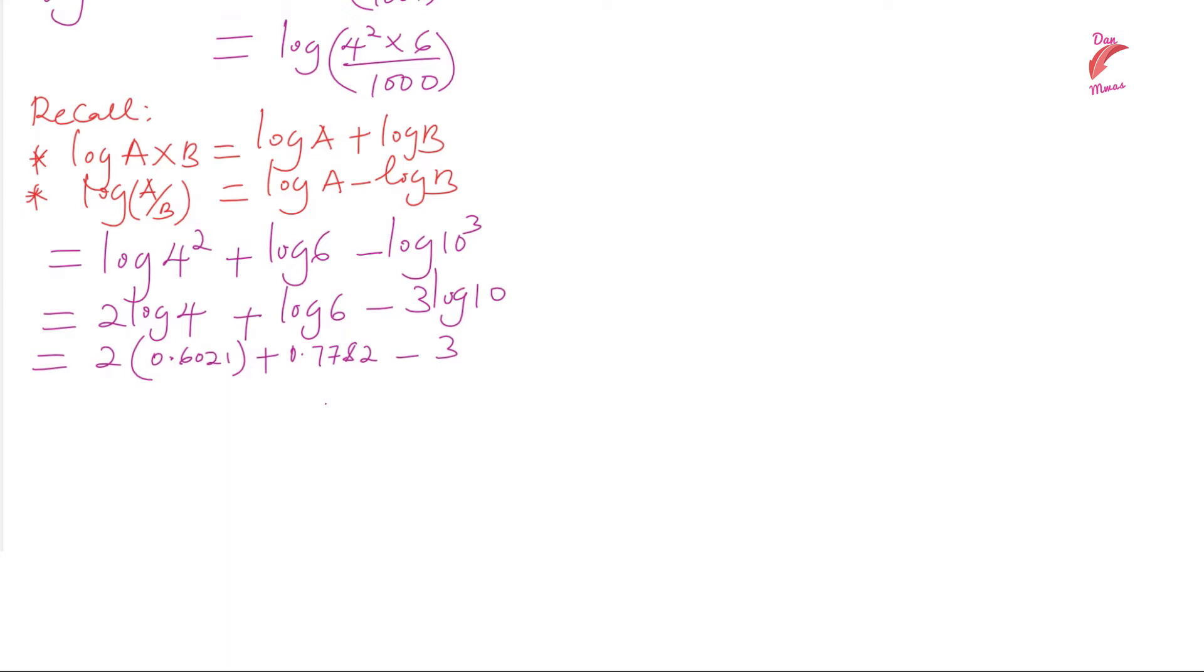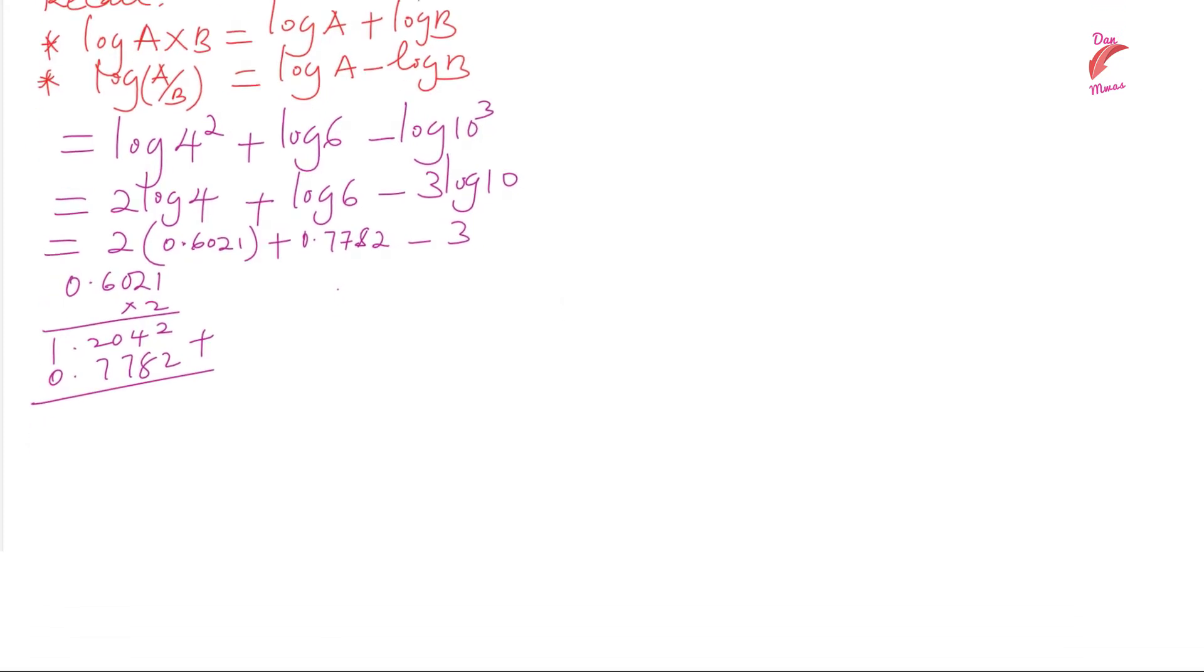Now we are not supposed to use any calculator, so we're going to multiply manually. We have 0.6021 multiplied by 2, which gives 1.2042. Then we add 0.7782. When you add these we get 1.9824.